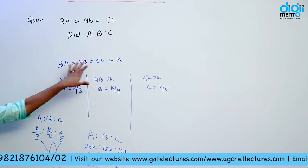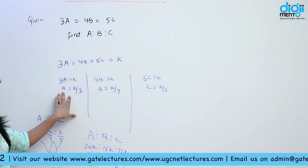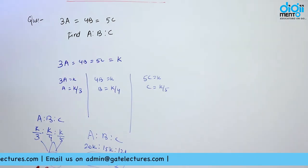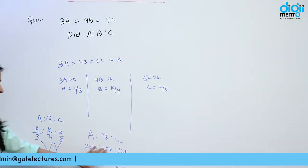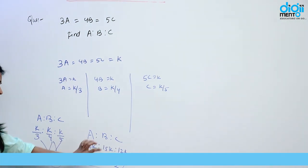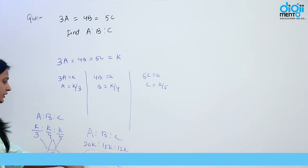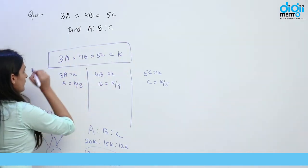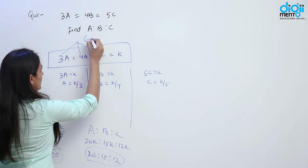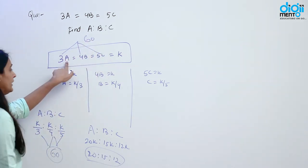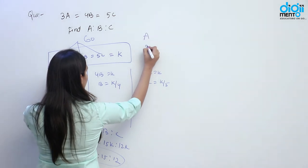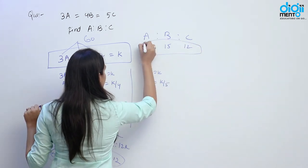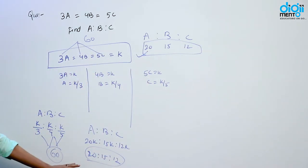Humne kya kiya? Humne isko ek variable K ke equal maana — yahan se humne A, B, C ki value find out ki. Ab humne teen numbers ka LCM le liya — 60. LCM se divide karenge toh yahan par 20K milega, 15K milega, 12K milega. Ab K jo hai common hai woh cancel out ho jayega. Toh hamare paas jo final ratio aayega ABC ka woh 20 ratio 15 ratio 12 aayega. Aap direct bhi kar sakte ho — teeno numbers ka LCM lo 60 aur divide karo 3 se to A milega 20, B milega 15, aur similarly C is 12.